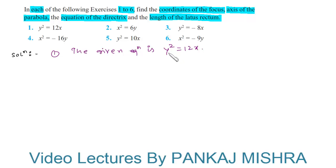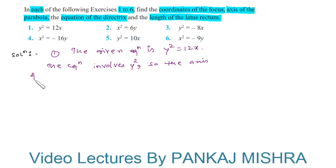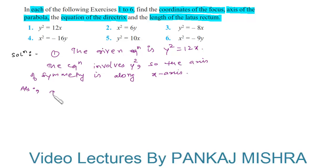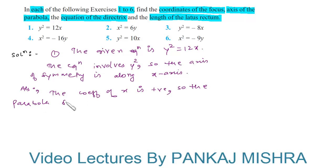Since the equation involves y², the axis of symmetry is along the x-axis. Also, the coefficient of x is positive, so the parabola opens to the right.